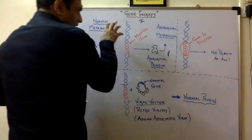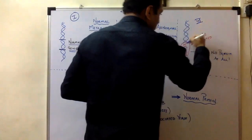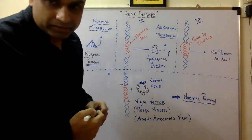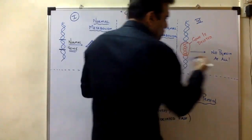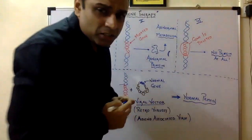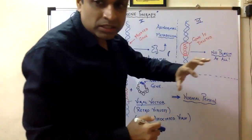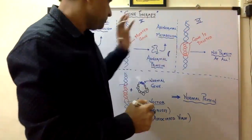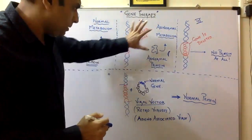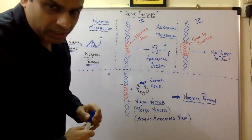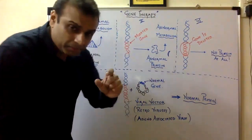Case 3 is another type of mutation in which the gene is almost deleted. As a result of the deletion of that gene, no protein is formed. If there is no protein formed, the metabolism is impaired. We can cure these two cases of abnormal metabolism by gene therapy.